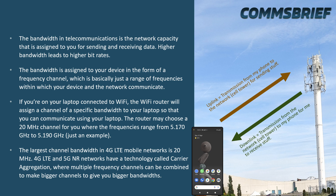Let's take the example of a Wi-Fi router. If you are on your laptop connected to Wi-Fi, the Wi-Fi router will assign a channel of a specific bandwidth to your laptop so that you can communicate. The router may choose a 20 megahertz channel for you where the frequencies range from 5.17 gigahertz to 5.19 gigahertz. The bandwidth here is the difference between these frequencies, which is 0.02 gigahertz, or 20 megahertz.